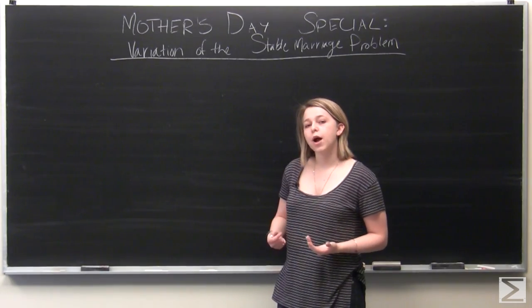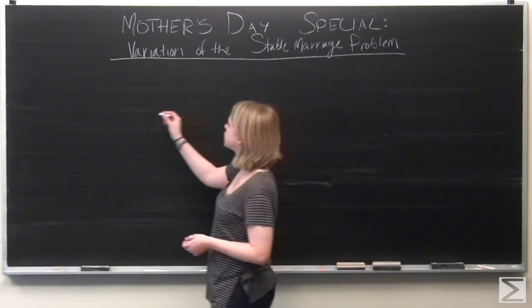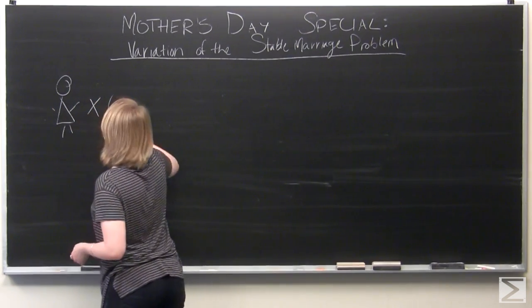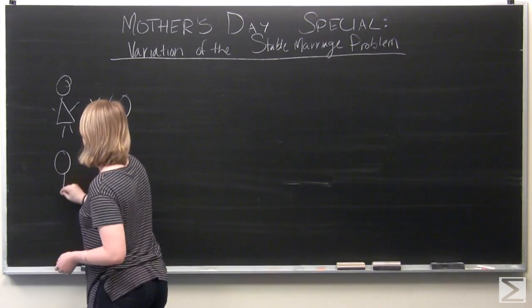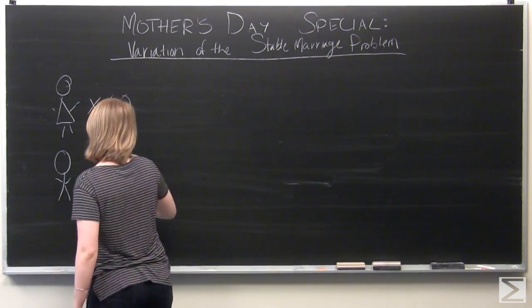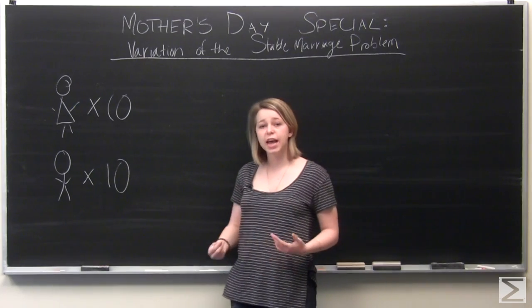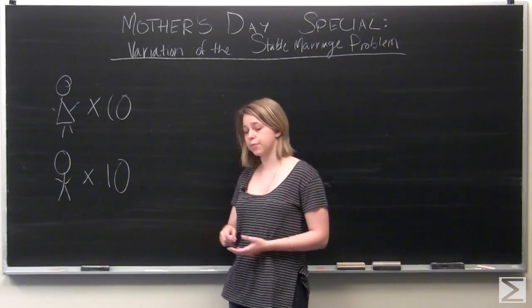But the original statement of the problem goes a little bit like this. There's a very small village with 10 women and 10 men. And a matchmaker wants to know if there is a way to arrange 10 stable marriages out of these 20 people.